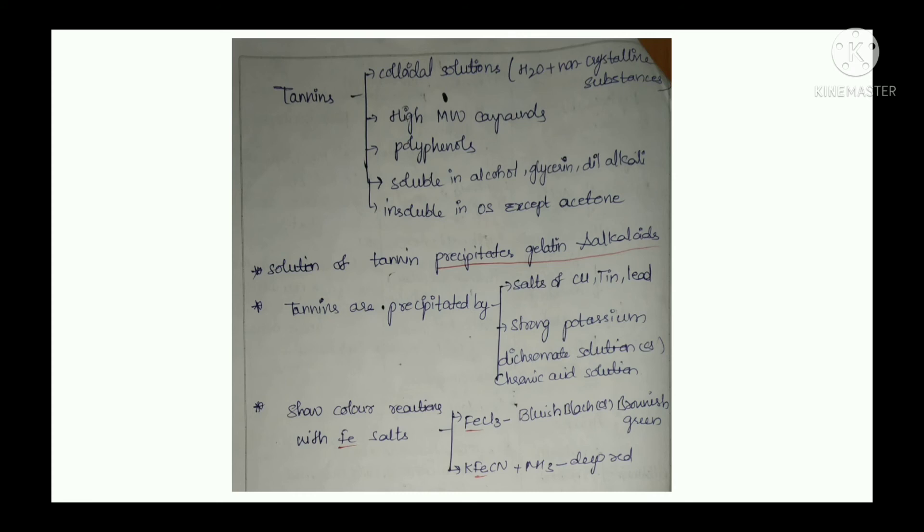They are polyphenols and soluble in alcohol, glycerine, and dilute alkali, whereas insoluble in organic solvents except acetone. The solution of tannins precipitates gelatin and alkaloids, whereas tannins are precipitated by salts of copper, tin, lead, and strong potassium dichromate solution, and also 2% solution of phenelzine.